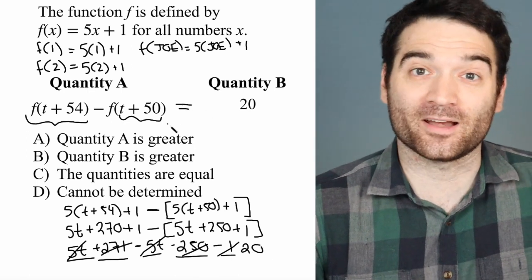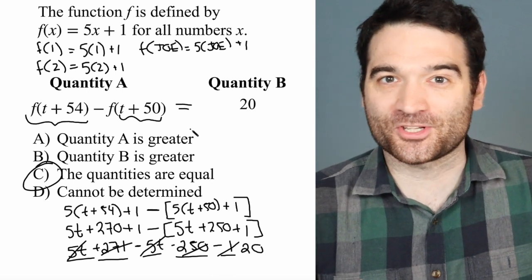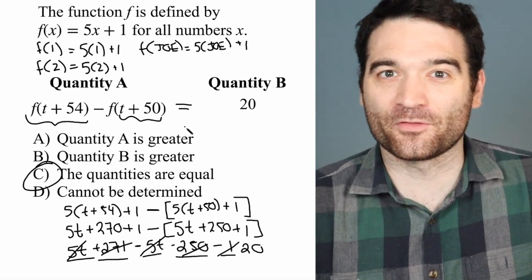So it looks like these two quantities are indeed equal. Answer is C. For more GRE tips and tricks, or to sign up for my live online course, follow the link on my profile.